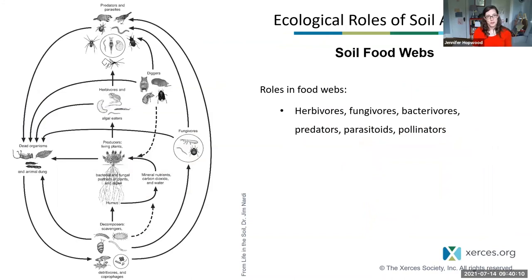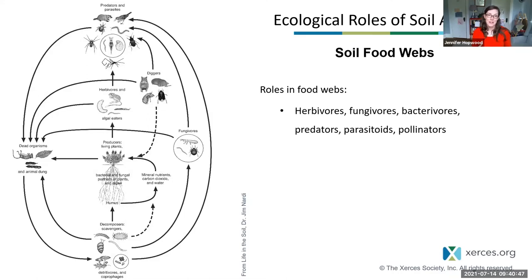There are additional important ecological roles for soil animals. They fill many different roles within food webs — they can be herbivores feeding on live plant matter, fungivores or bacterivores influencing the microbial community, or predators and parasites of other animals. There are also a few groups that are important above ground as pollinators. So there's lots of life happening underground, much of it out of sight, which is why we're focusing on the groups most important in agricultural systems today.